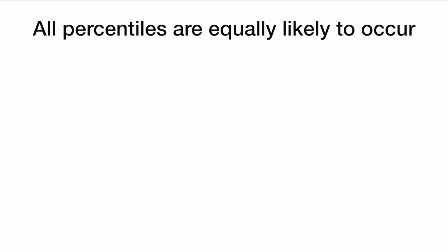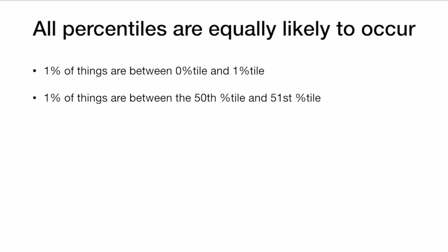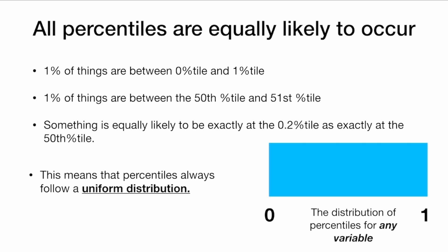All percentiles are equally likely to occur. So 1% of things are between the 0 percentile and the 1st percentile. 1% of things are between the 50th percentile and the 51st percentile. So something is equally likely to be at exactly the 0.2 percentile as it is to be at the 50th percentile. All percentiles are equally likely to occur. And this means that percentiles always follow a uniform distribution. The distribution of the percentile for any variable follows a uniform distribution.